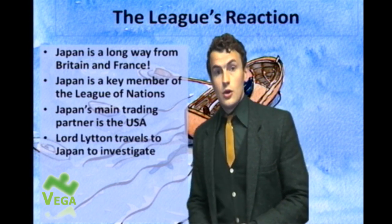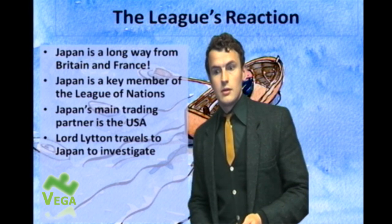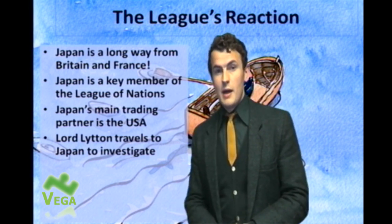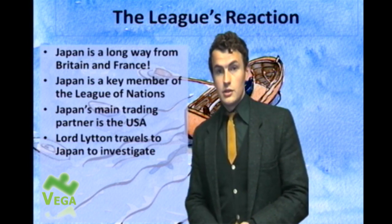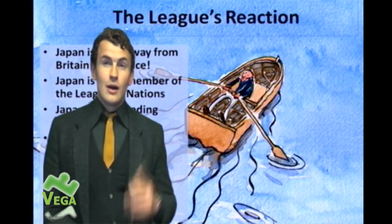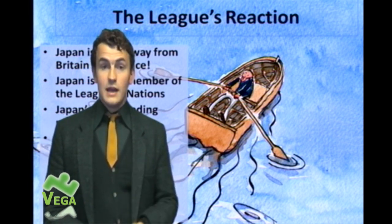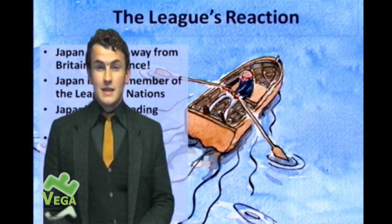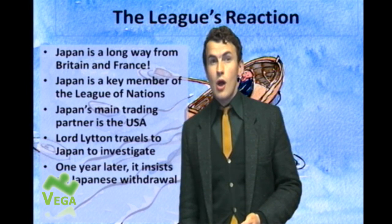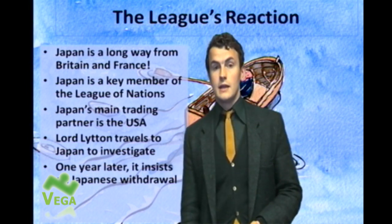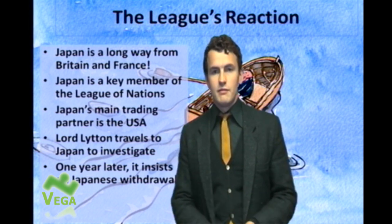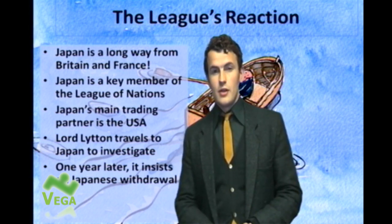So Lord Lytton, who was part of the British contingent in the League of Nations, travelled to Japan to investigate. However, he went by boat, which took him months to get there. He didn't publish his findings until approximately one year later. When he did publish those findings, he insisted that Japan had behaved unpleasantly and insisted on their withdrawal from Manchuria.